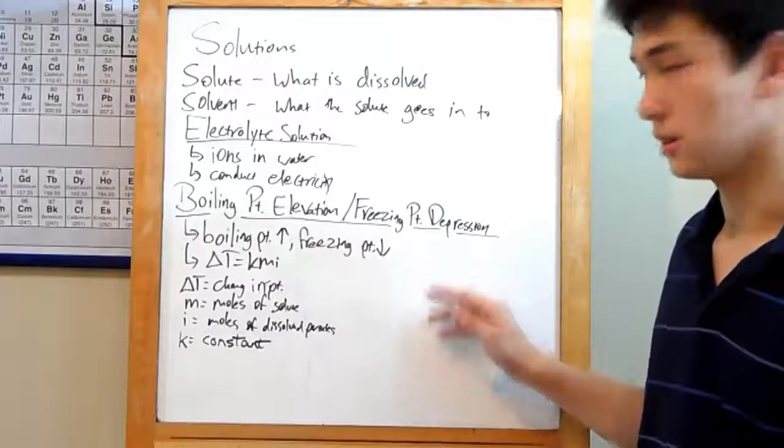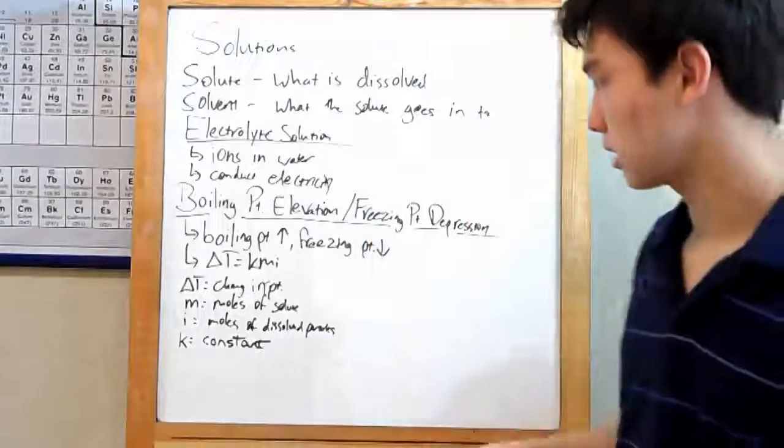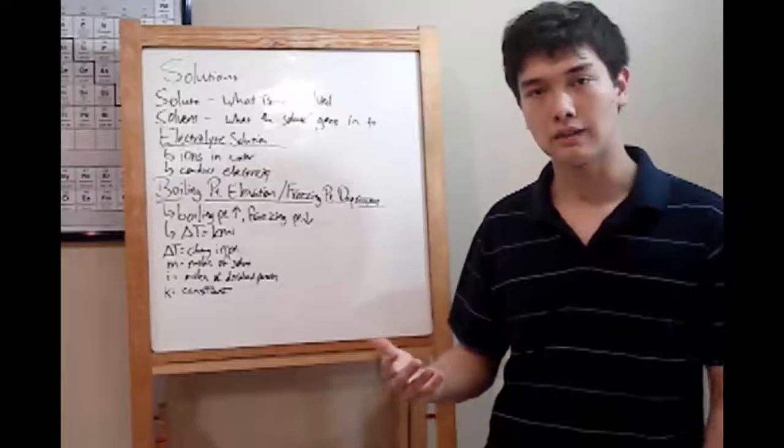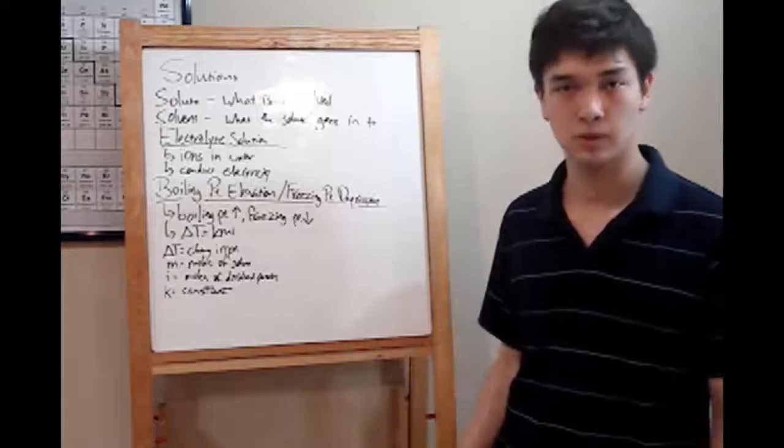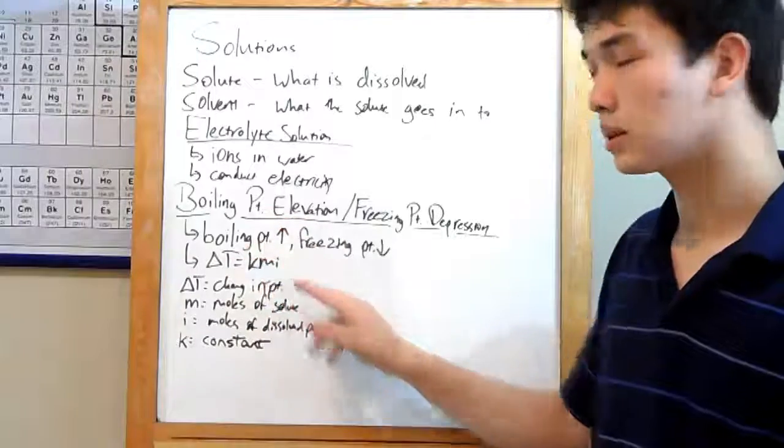Whenever you do a dissolution, what happens is the boiling point of your solvent goes up and the freezing point goes down. As with water, your boiling point might go up to 105 degrees Celsius, and your freezing point might decrease to maybe negative 2. This is described by the equation delta T equals KMI.